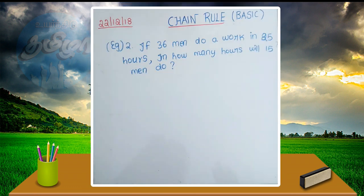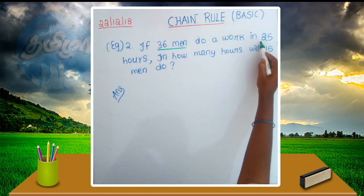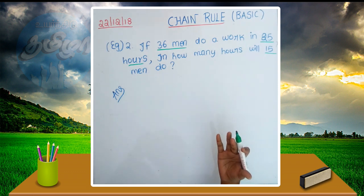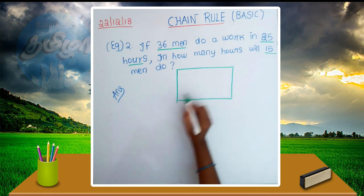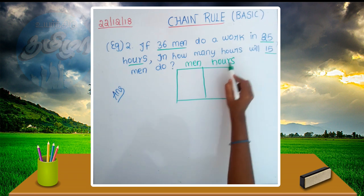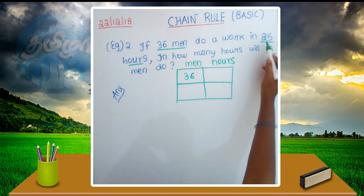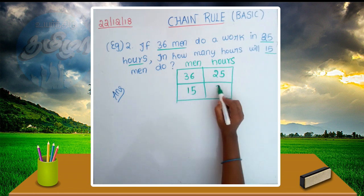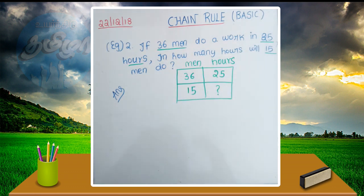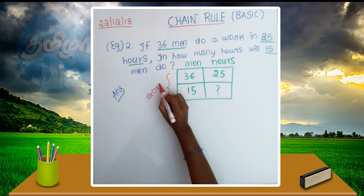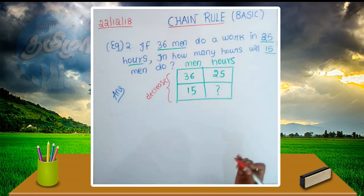Okay friends, now let's see the second example. 36 men are working 25 hours. Now if only 15 men are working, how many hours will they work? Men and hours: if men decrease, they will need more hours. In the first example, 36 men work 25 hours; if the number decreases to 15 men, the hours increase. So this is indirect proportion.